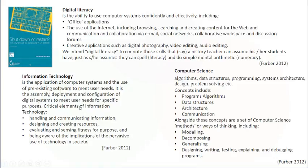Information technology was looked at as more of using existing systems and existing software to meet users' needs — very much creating artefacts from software that already exists. And then computer science is very much using programming, algorithms, and systems architecture to create applications. Alongside this, they highlighted methods or ways of thinking, what we generally refer to as computational thinking techniques.